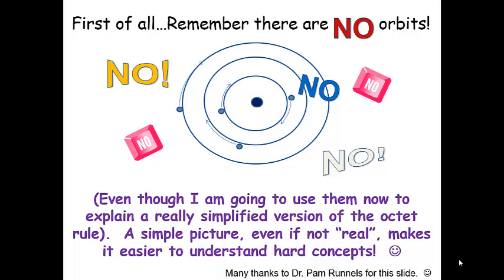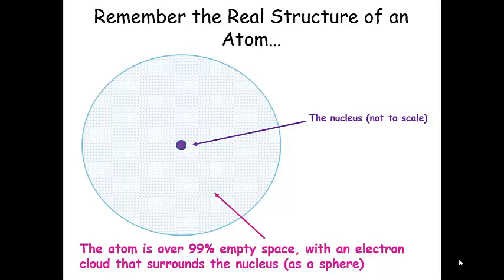So the first thing we want to remind ourselves of is that in reality, there are no orbits. But I am going to use orbits or a picture of them to explain this concept. But just remember, it's not real, but it gives us a chance to visualize how we're going to form octets or how we're going to add electrons or take away electrons to have 8 electrons in the valence shell.